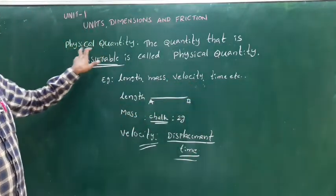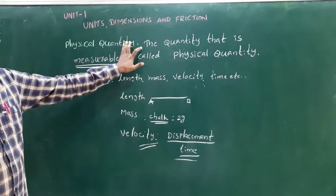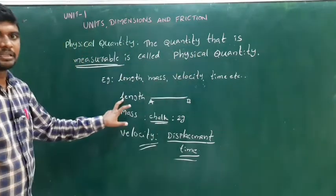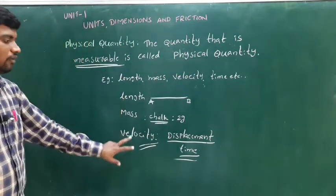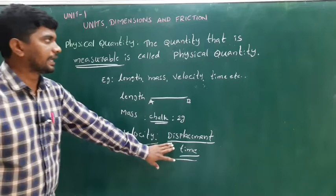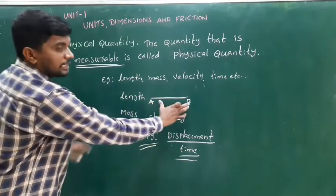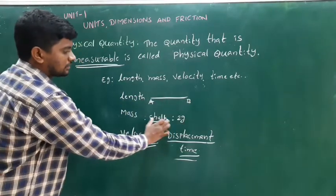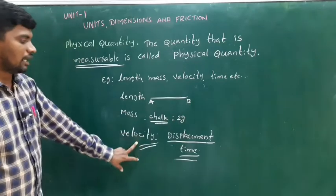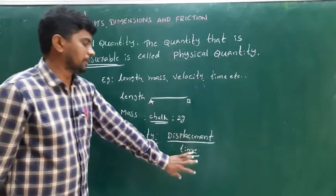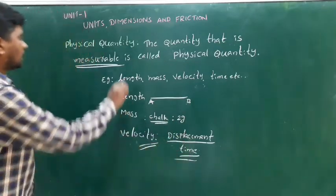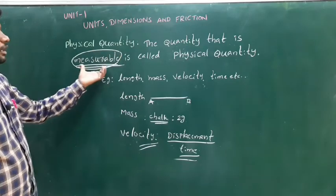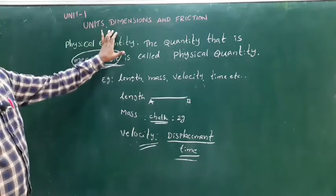To repeat: physical quantities such as length, mass, velocity, and time are measurable. For example, the distance between two points, the weight of a chalk piece, and displacement divided by time — all are measurable quantities and are called physical quantities.